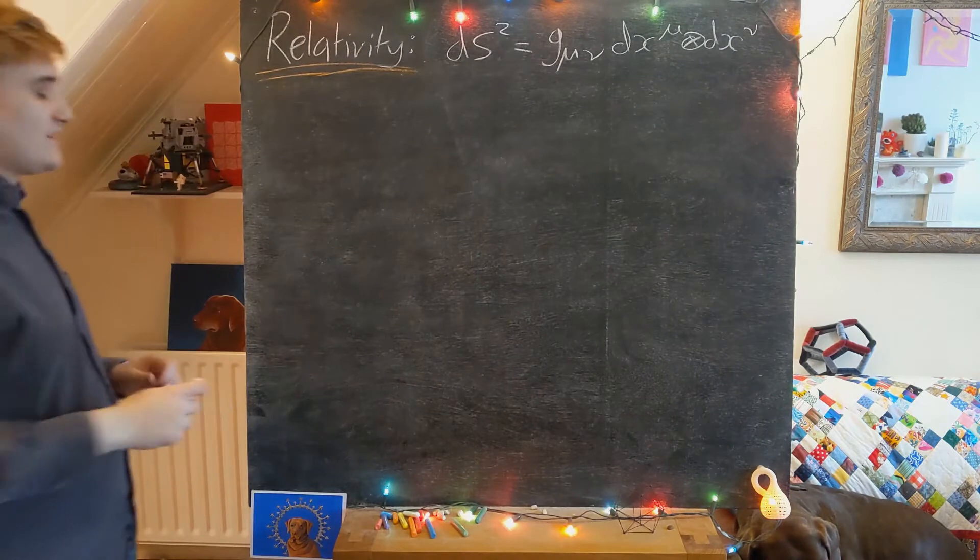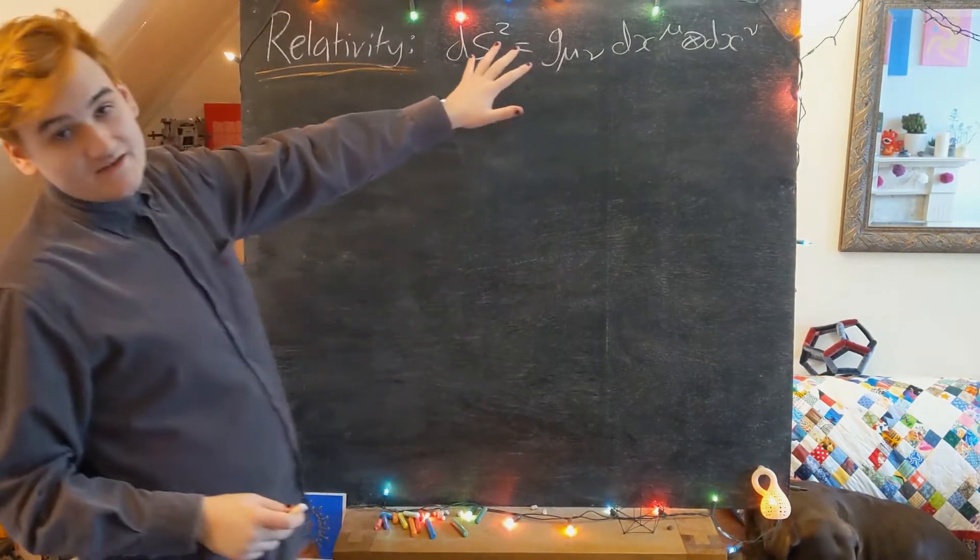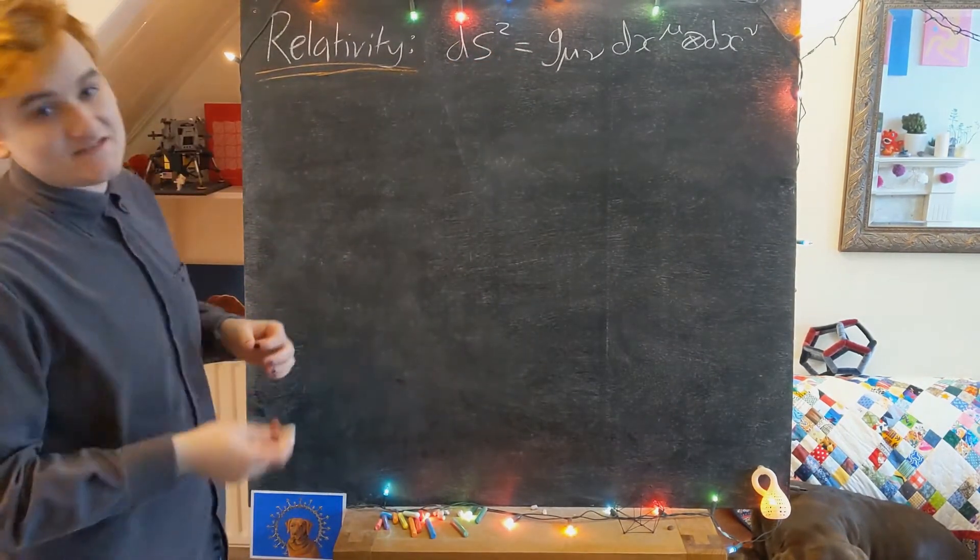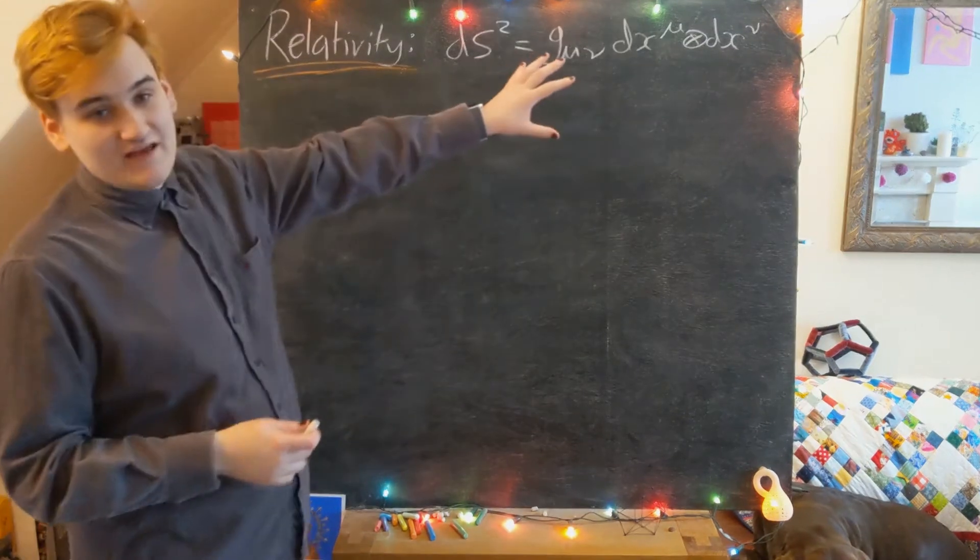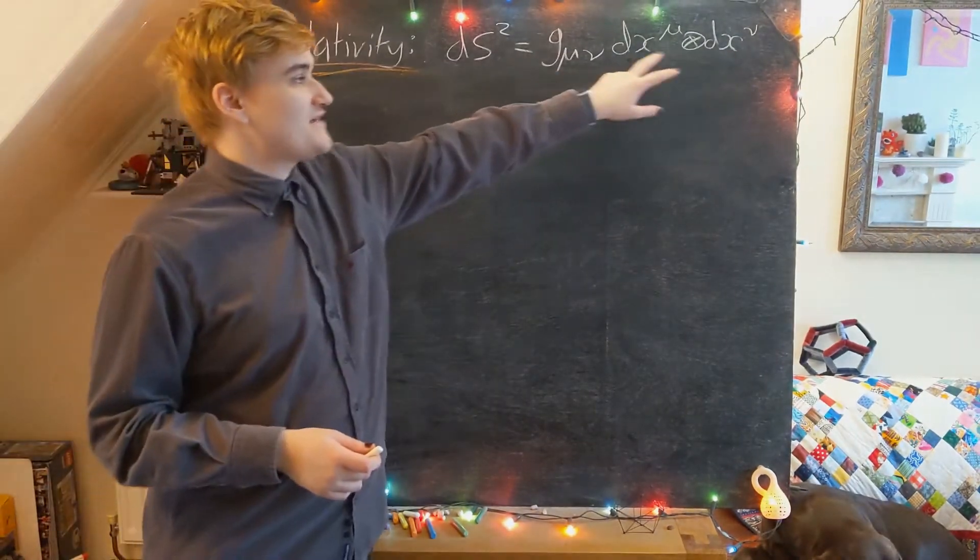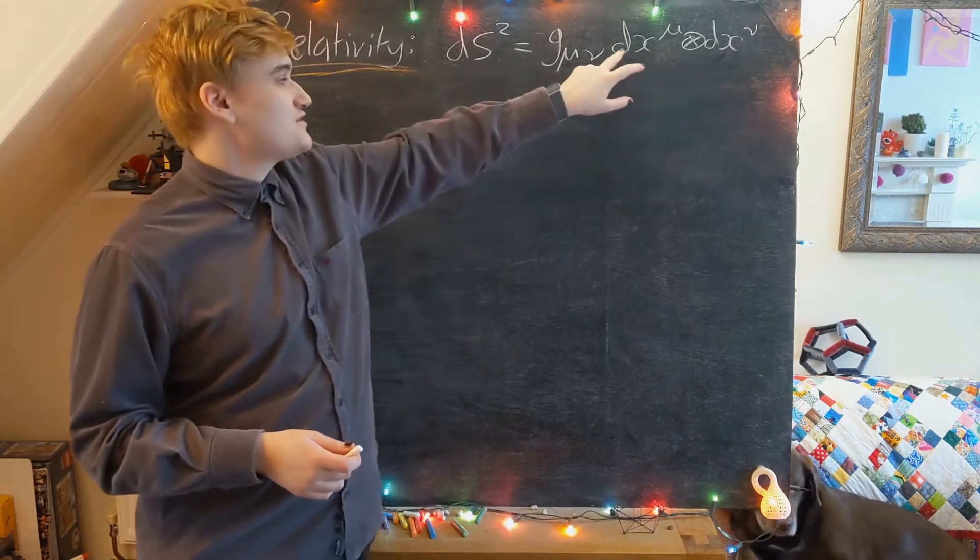We've now begun exploring a little bit how this object actually functions as a tensor. We saw that it's a (0,2) tensor - it's waiting to eat two vectors.